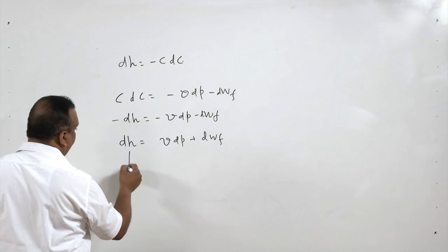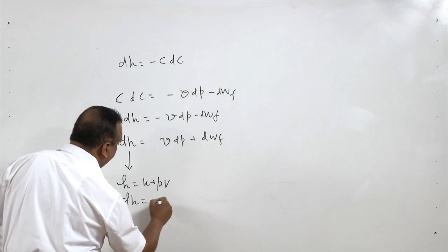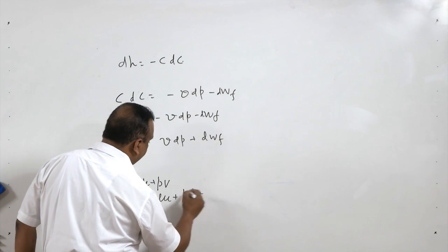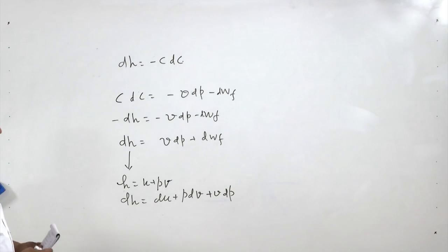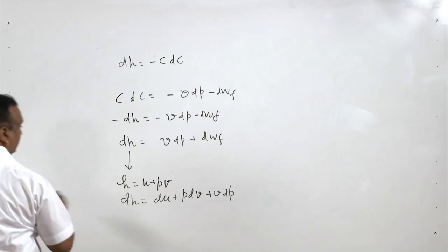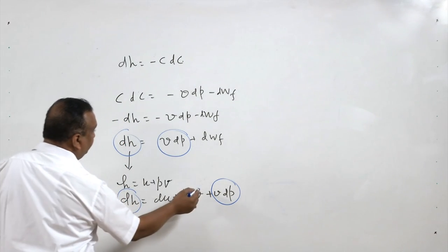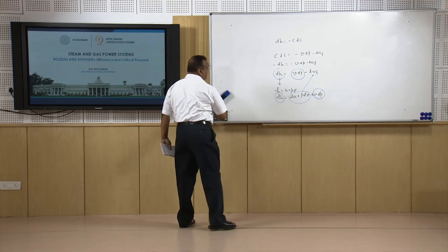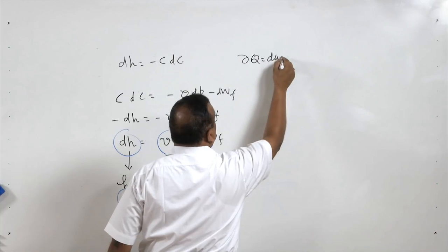For enthalpy, we know that h equals U plus PV, or dh equals dU plus P dV plus V dP. Comparing the two equations, the V dP terms are common in both. This gives us dWf equals del Q, which is equal to dU plus P dV — this is nothing but the heat transfer relation.